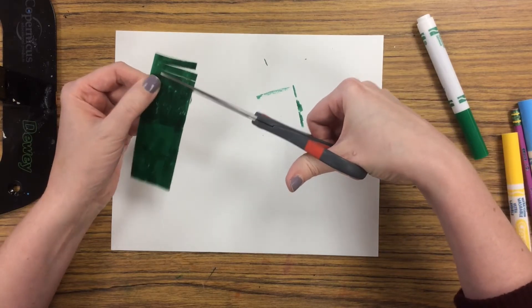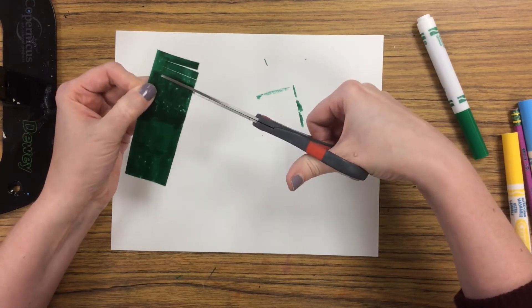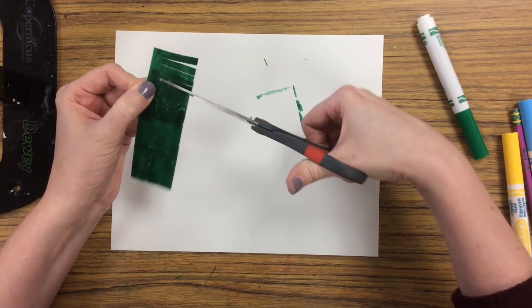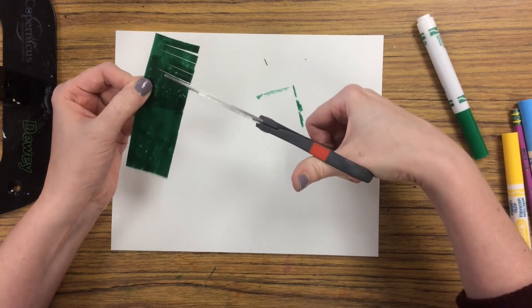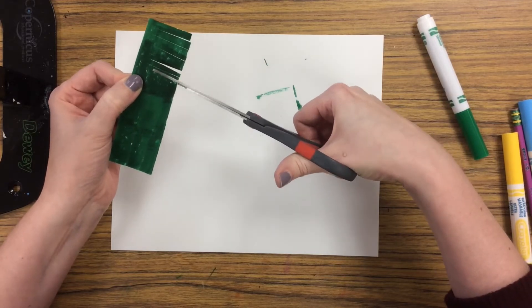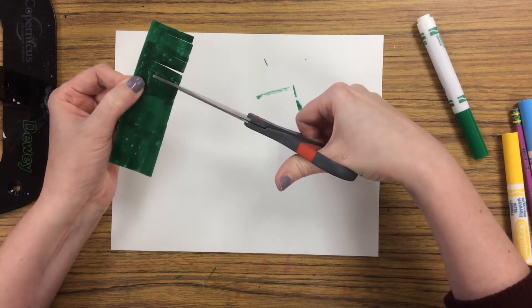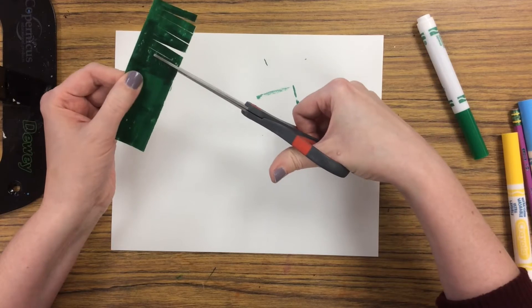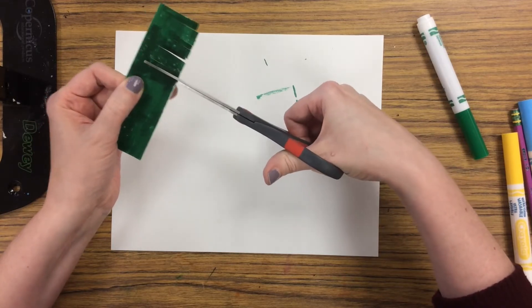And you're just gonna keep cutting little strips that's going to look like our grass. And take your time, we never want to rush when we're cutting, and keep an eye on where your fingers are to keep the other hand away from your scissors.